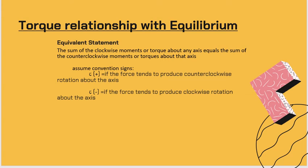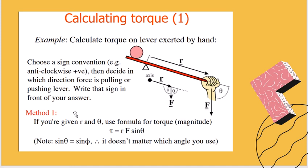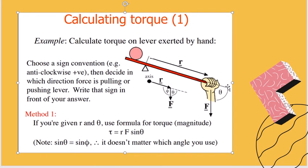For you to understand the moment of force, we're going to have a given illustration. Calculating the torque — method one: calculate the torque on the lever exerted by the hand. With a given radius, this will be your moment arm. You exerted a force downward. Choose a sign convention — either anti-clockwise as positive. Decide in which direction the force is pushing the lever and write the sign in front of your answer. If you're given R and theta, use the formula for the torque magnitude.